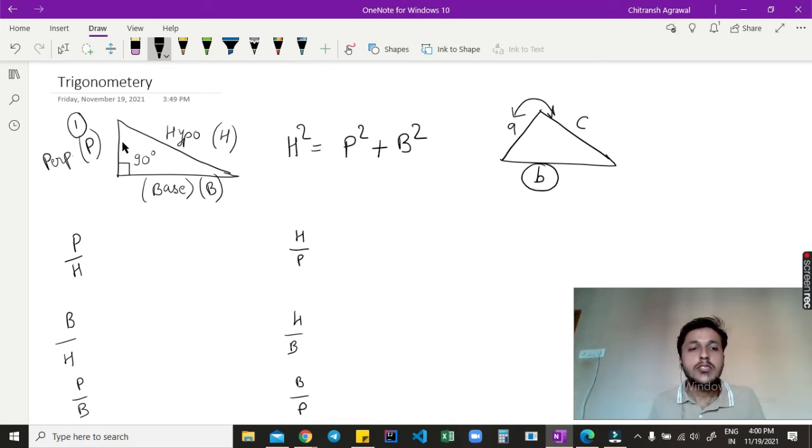Suppose if the sides of this triangle, let's say if this is 3, this is 4, and this is 5, then P upon H can be 3 upon 5, B upon H can be 4 upon 5, and P upon B can be 3 upon 4. So these are just the ratios of the sides.